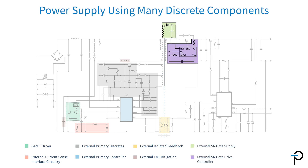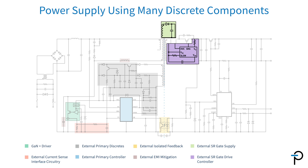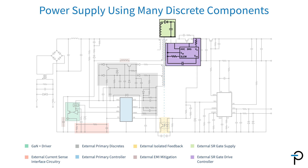Moving over to the secondary side of the controller, past the opto and past the transformer, we get to the synchronous rectifier. This is a high-side synchronous rectifier. It's quite complicated. There are several components there. Once again, all of those components need to be specified, designed in, and proven to operate across the wide range that we expect this power supply to function over.